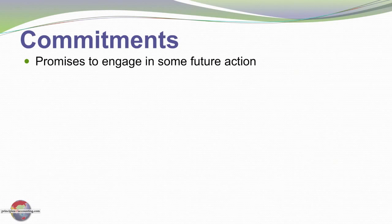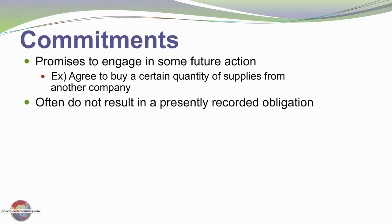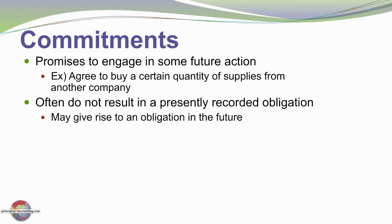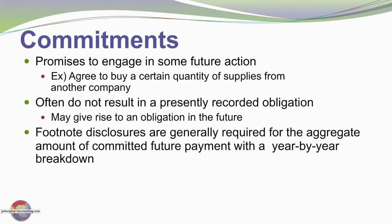One should also be very careful about understanding the nature of commitments that may not be reflected as liabilities on the books. For example, a company agrees to buy a certain quantity of supplies from another company — these often do not result in an obligation on the balance sheet, but may give rise to significant future obligations. Footnote disclosures are generally required for the aggregate amount of future committed payments, typically with a year-by-year breakdown for at least the next five years. Financial statement users should pay close attention to footnotes, not only the debt on the books but other intrinsic commitments the company may face.